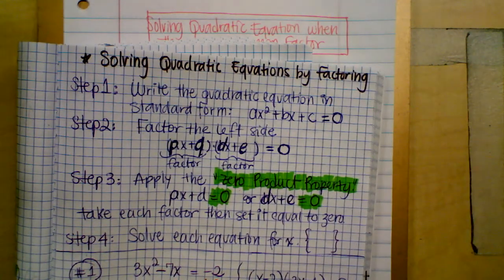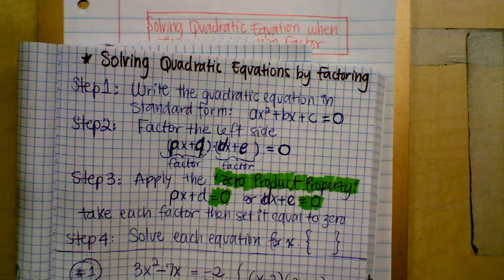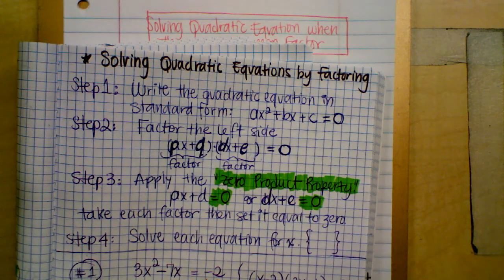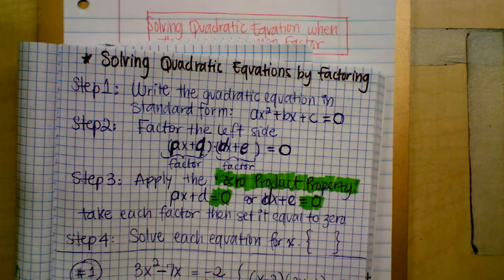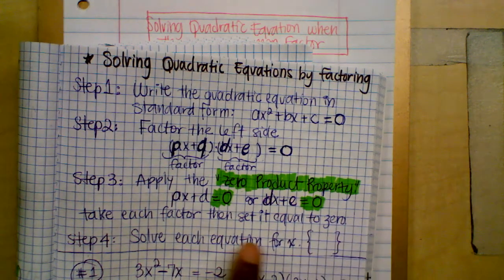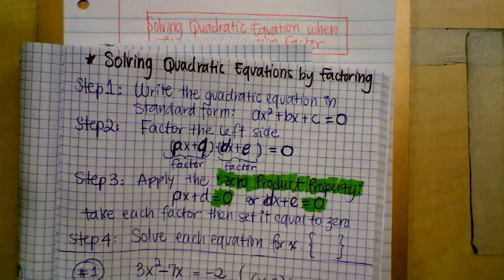The value of x represents the x-intercept. It means that if the solutions are real, it means that the parabola crosses the x-axis at both given x values.